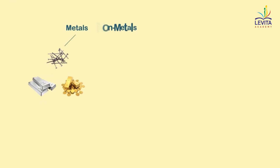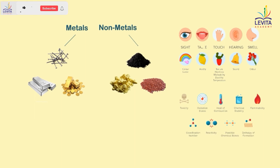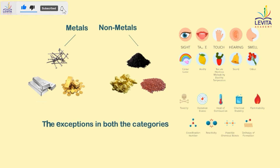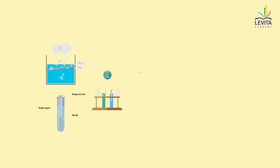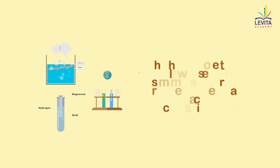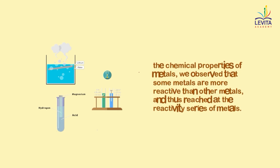Previously, we learnt about metals and non-metals and looked in detail about their physical and chemical properties, and also discussed about the exceptions in both categories. We learnt in brief about how metals react with water, acids, and metal salts. During our discussion of the chemical properties of metals,